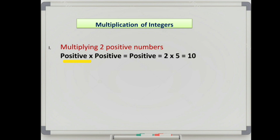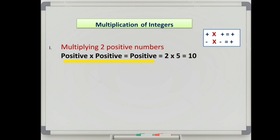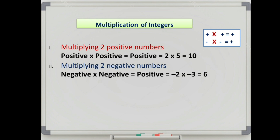If the given integers are both positive numbers, then the sign of the product is also positive. For example, 2 multiplied by 5: both numbers are positive, so the sign is positive and the product of 2 and 5 is 10. If both numbers are negative, then we write a positive sign.